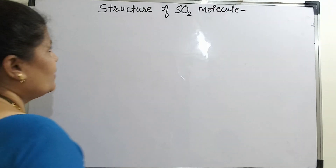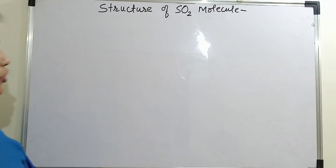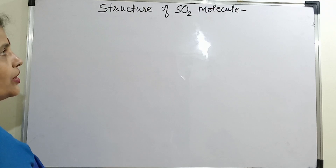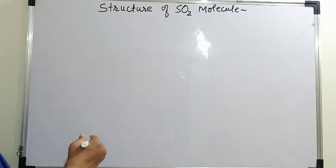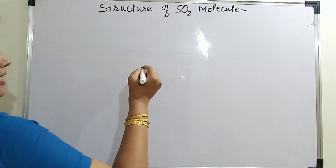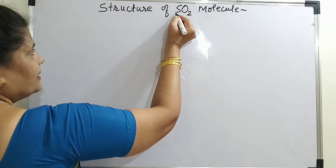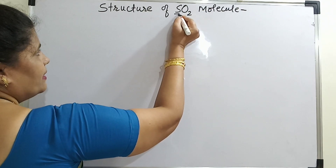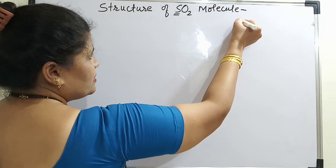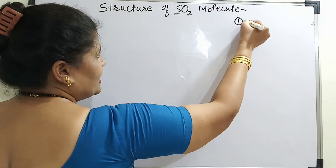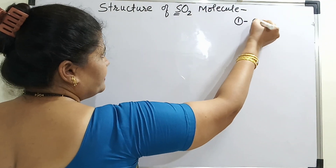In this video, we are going to see the structure of SO2 molecule, that is the complete hybridization on sulfur in SO2 molecule. To know that better, let us first select the central atom. The central atom here is sulfur. It is very important that the first step is to select the central atom.